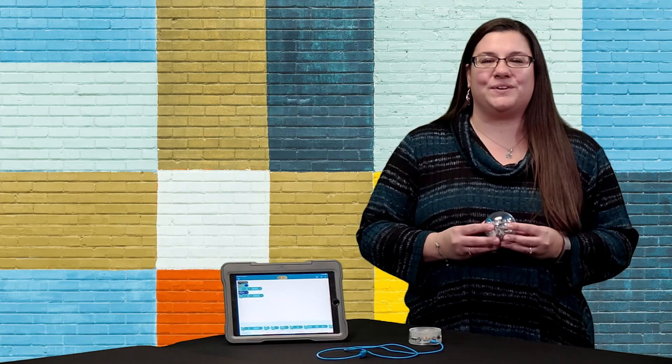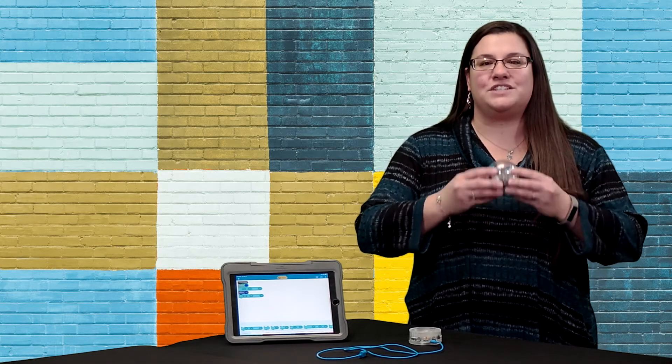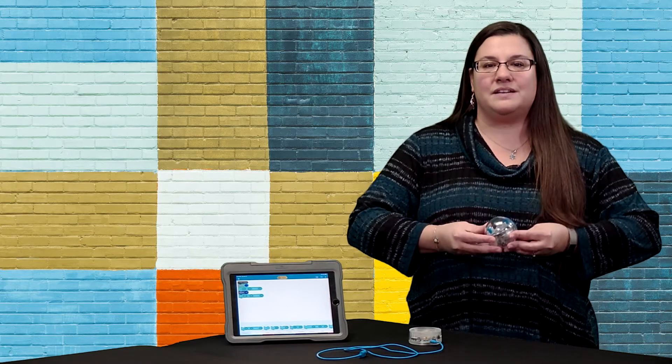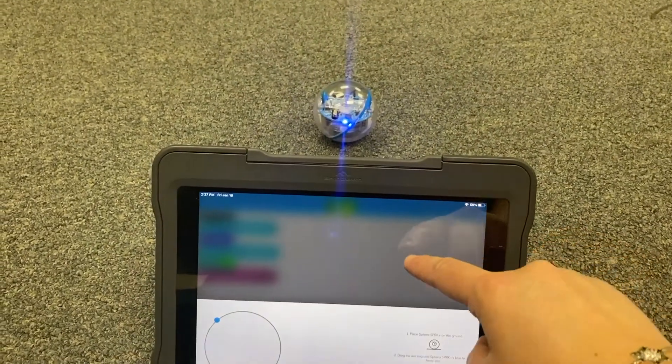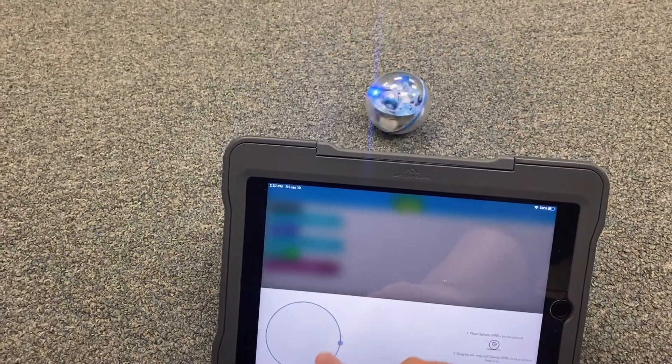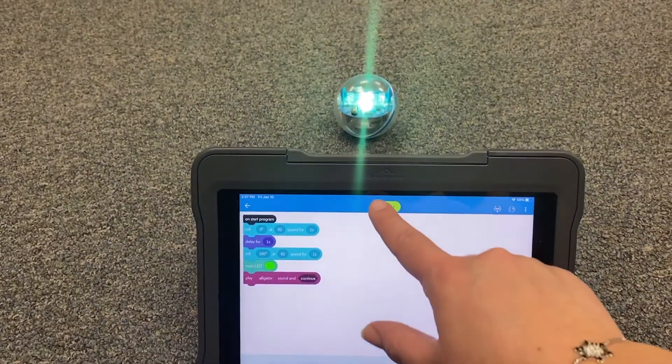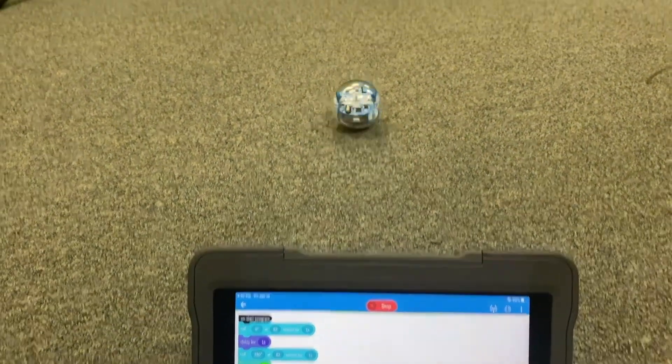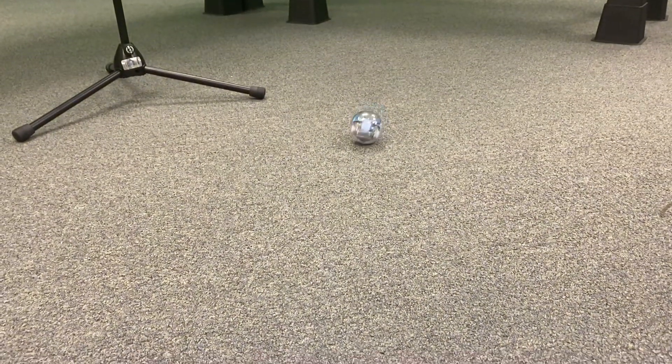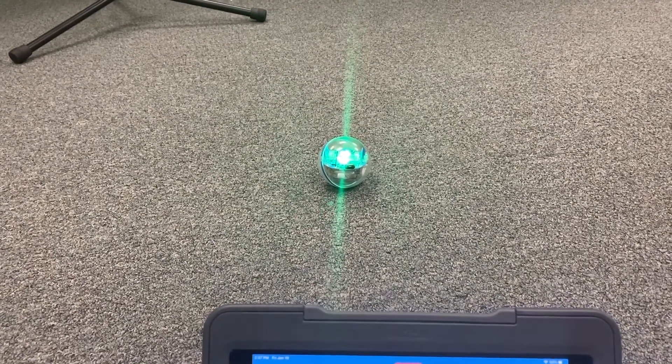Another unique way Sphero can be used in your classroom is to teach social-emotional learning. Similar to the way we use emojis to capture emotions such as joy, frustration, and embarrassment, we can use Sphero's lights, sounds, and movements to communicate emotion as well. Students can learn about body language and how people share their feelings.